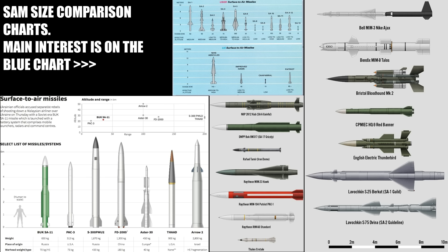It was introduced into service in 1955 and removed from service in 1982. Looking at the thing, it must have had approximately zero maneuverability. The range was still 50 kilometers — about 30 miles — at medium altitude. And the SA-2 — this is one that interests me, and I'm glad it's coming to DCS because it has history.